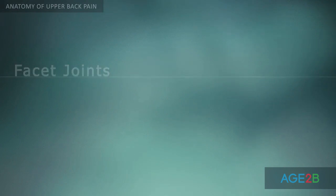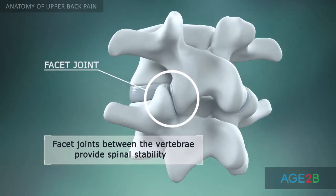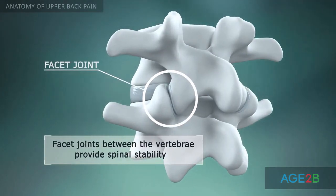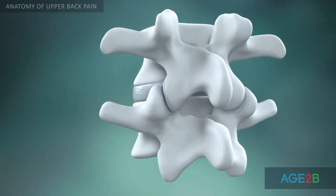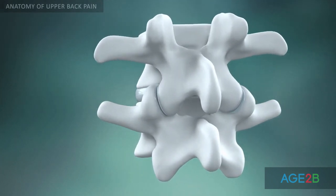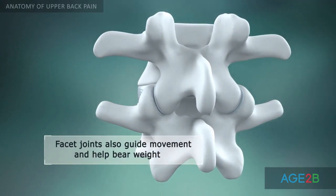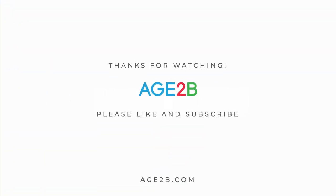Twelve thoracic vertebrae are joined by ribs to form your rib cage. Facet joints are located between each pair of vertebrae. They guide and limit the movement of the spine, providing stability and bearing a share of the load on the spine.